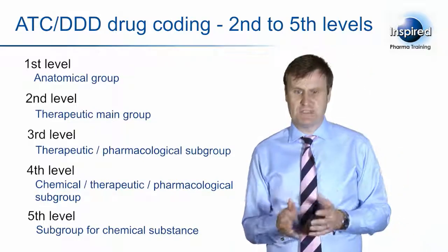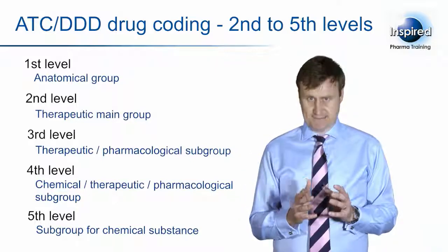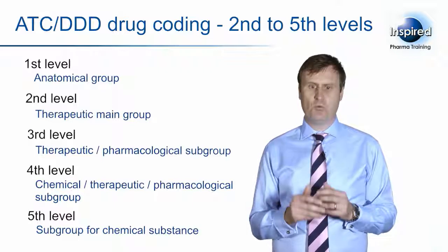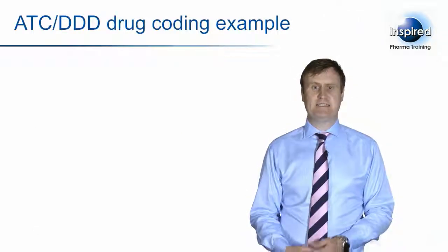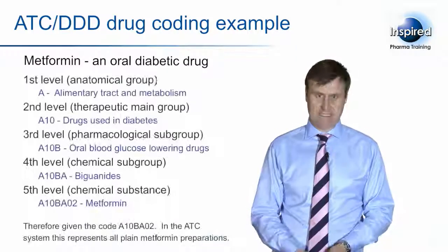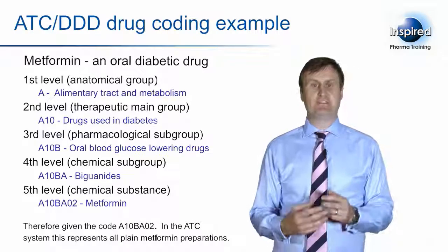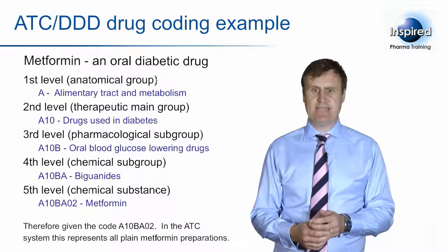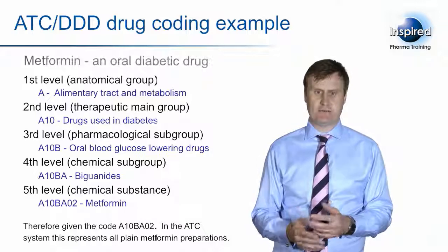Some drugs have multiple uses, and so they may have a number of different codes. However, this system, although complicated, produces a unique code for each drug that can therefore be tracked worldwide. An example of how the oral diabetic drug Metformin is coded gives the product the code A10BA02 in the ATC system — a unique code for that particular product.